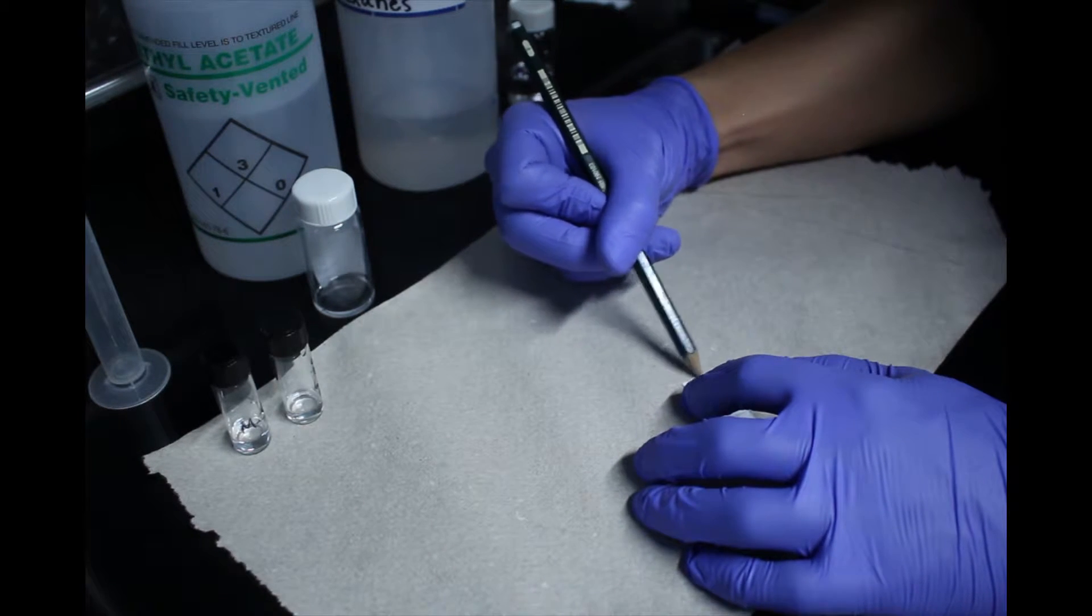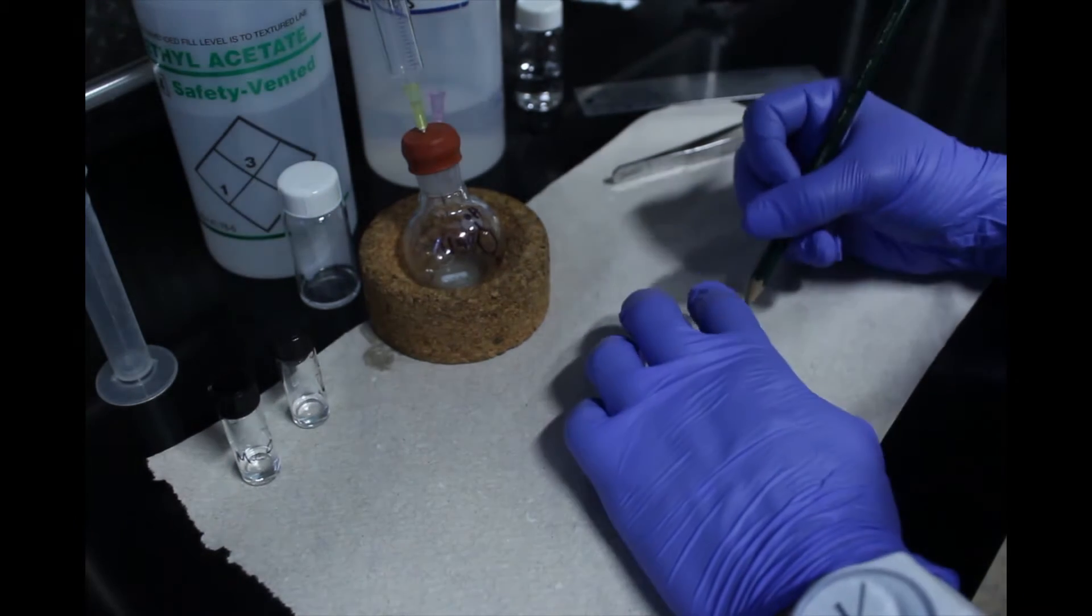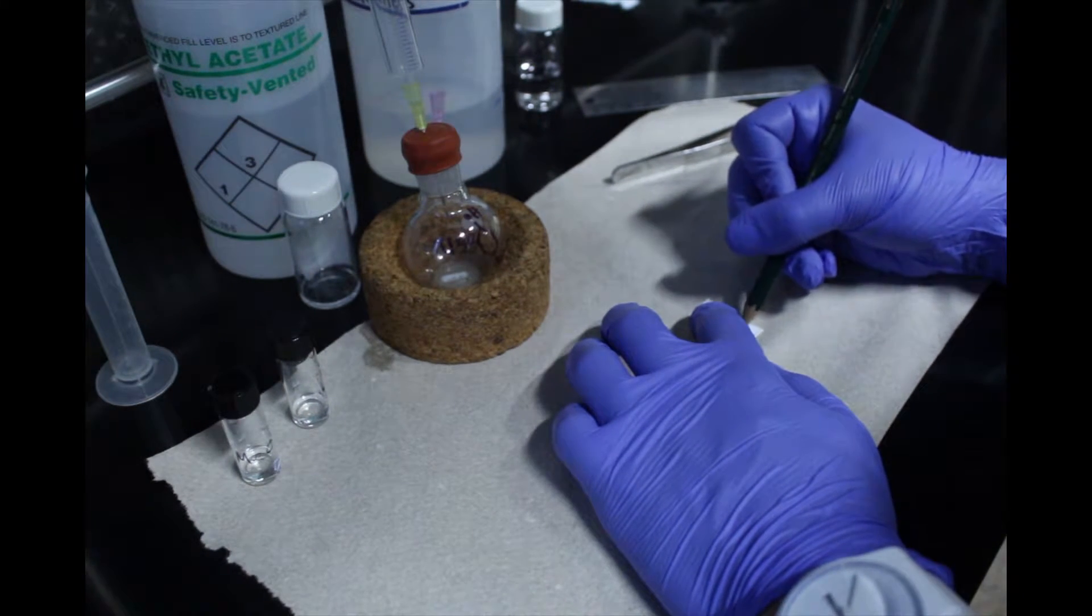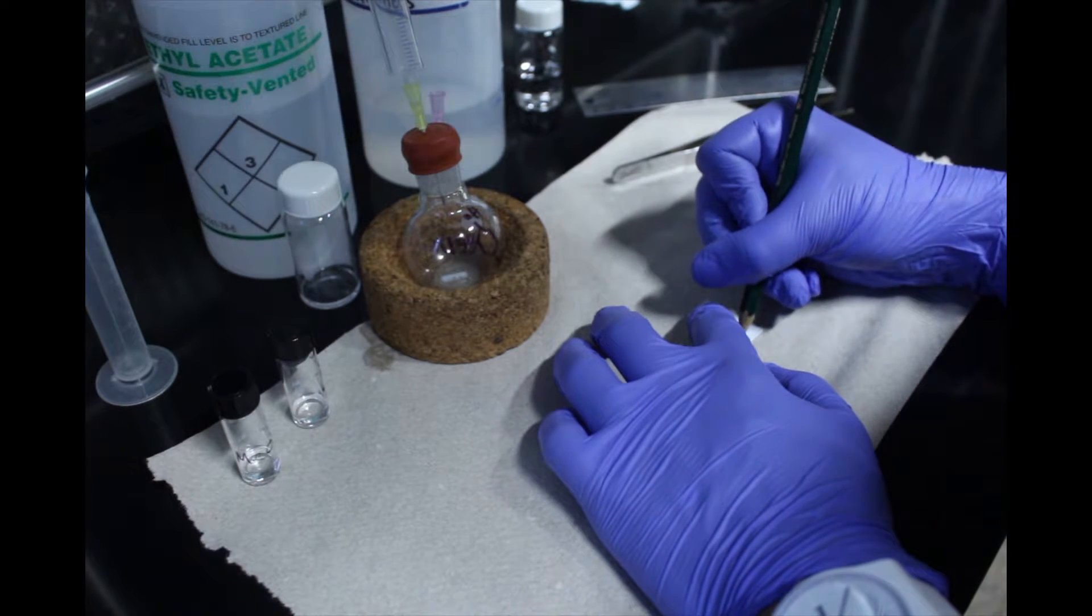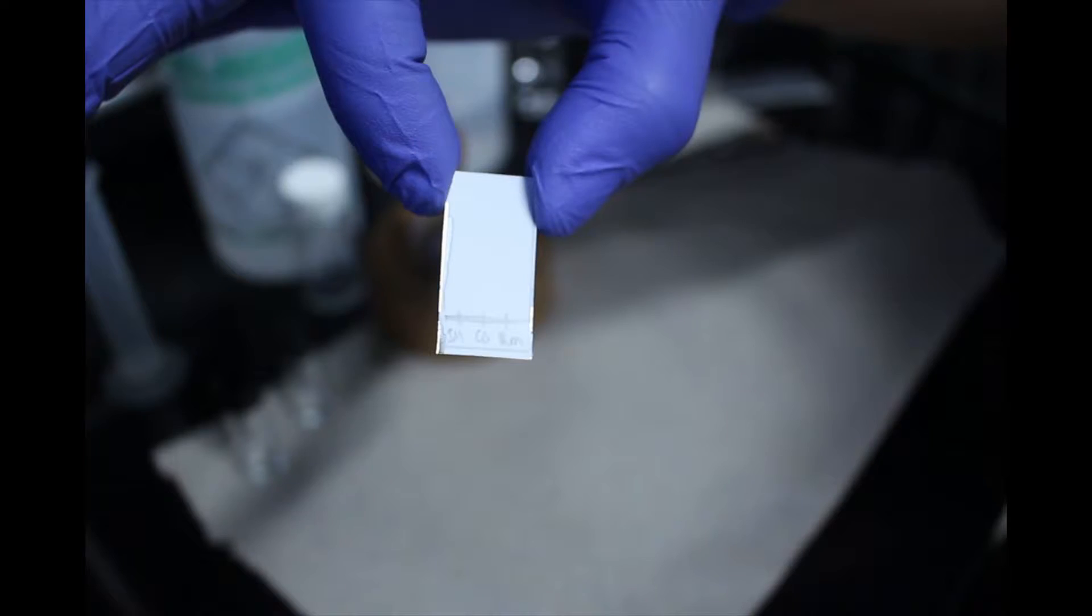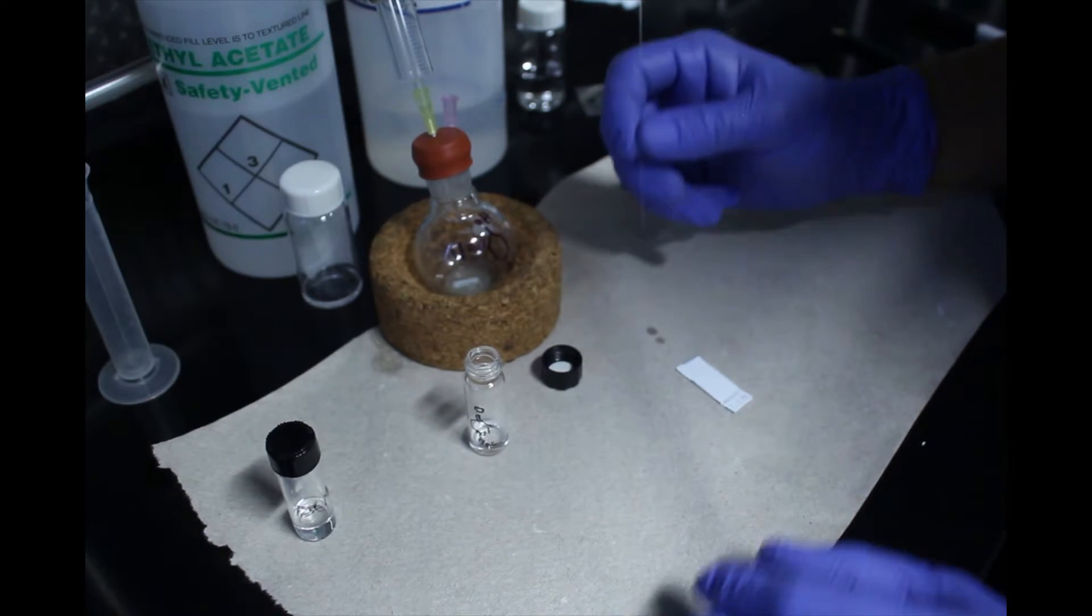To monitor a reaction by TLC, prepare a three-lane TLC plate. Label the first lane SM for starting material, label the second lane CO for co-spot, and the third as RM for reaction mixture.